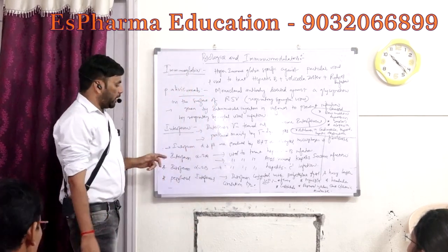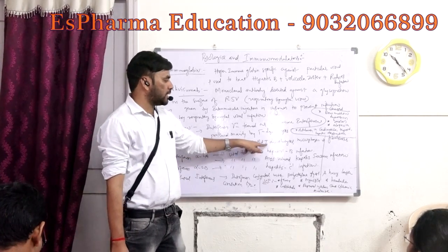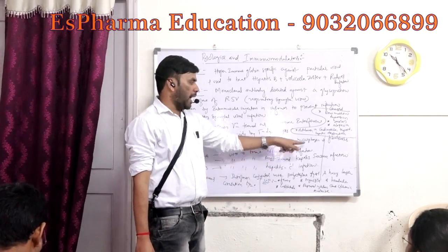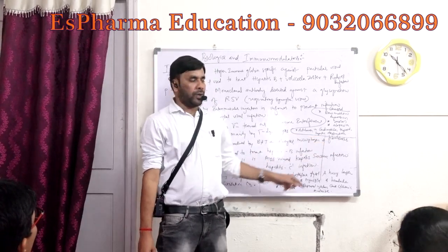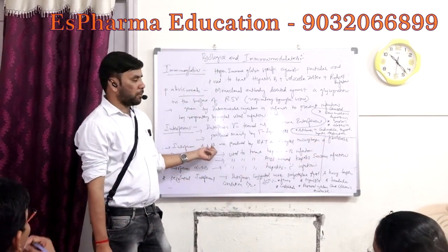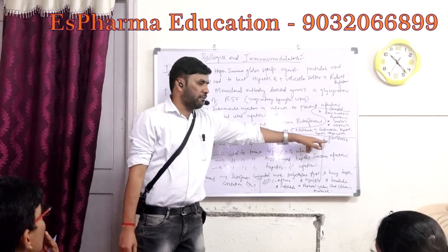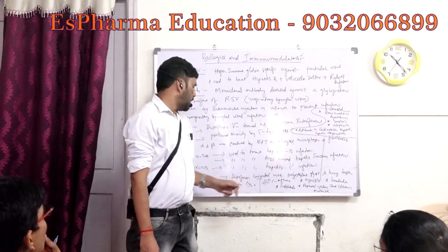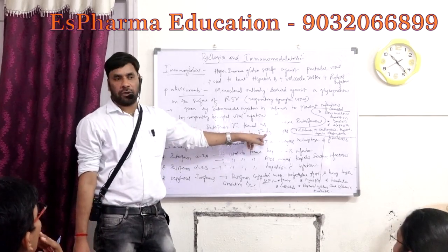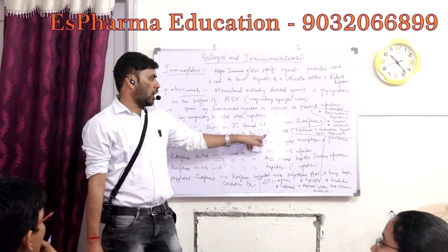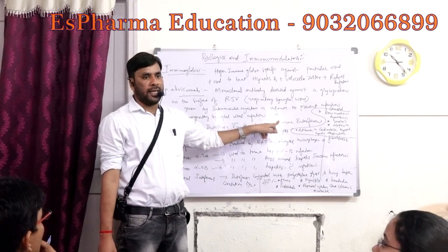Interferon alpha and beta are produced by B lymphocytes, T lymphocytes, macrophages, and fibroblasts. Only interferon gamma is produced solely by T lymphocytes. Interferon gamma is called immune interferon.